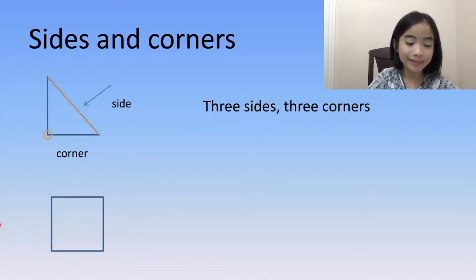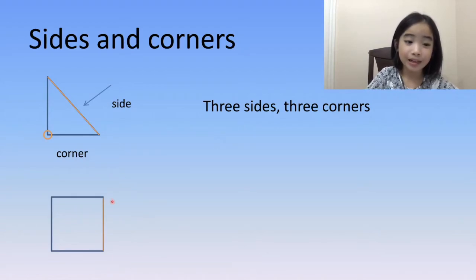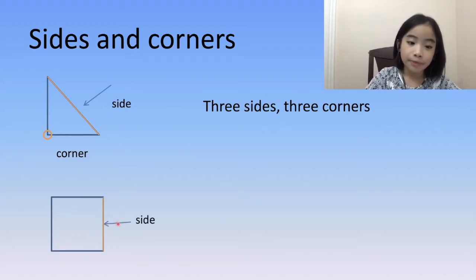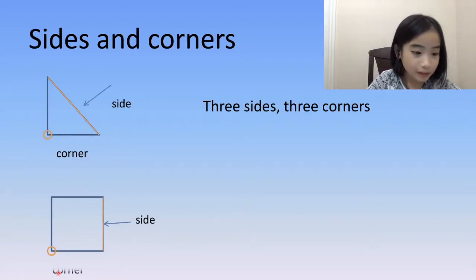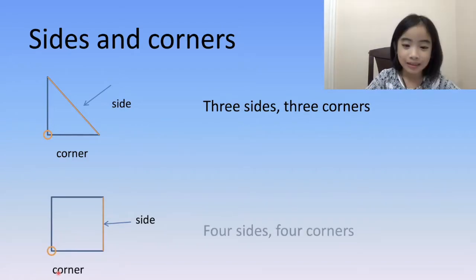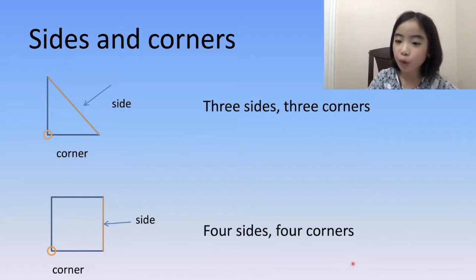Now, let's look at the square. Again, we have a side and corners. A square has four sides and four corners.